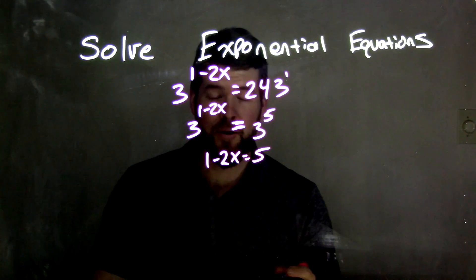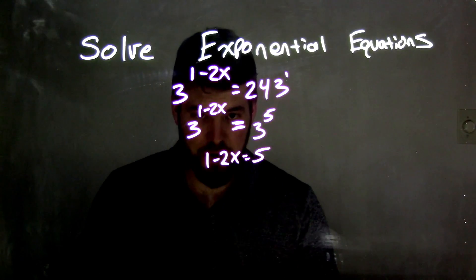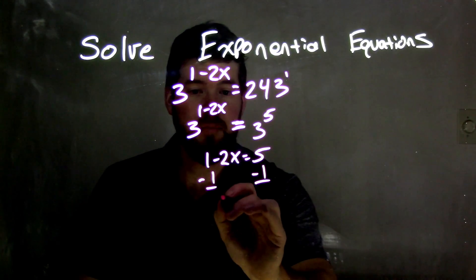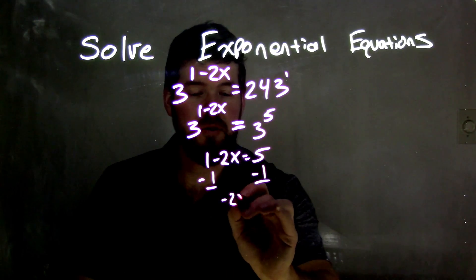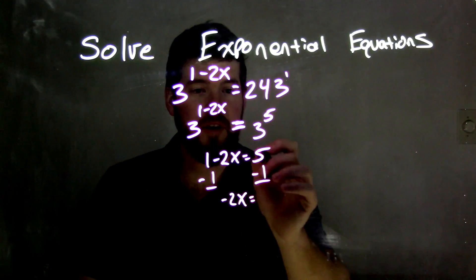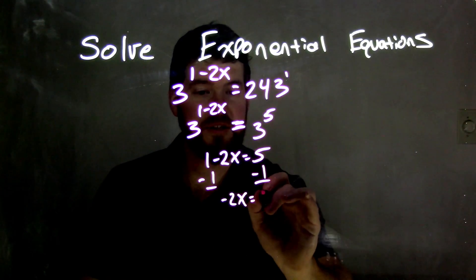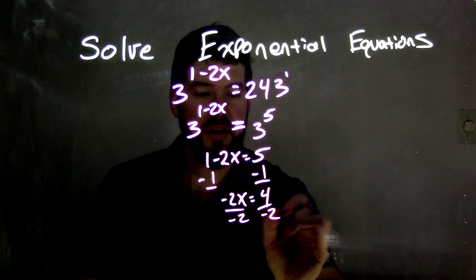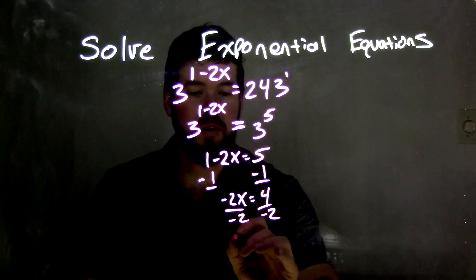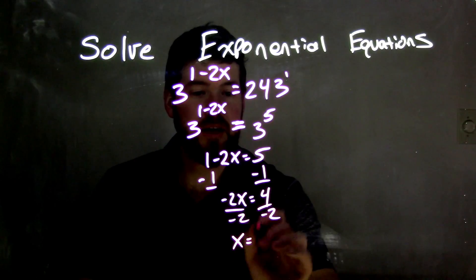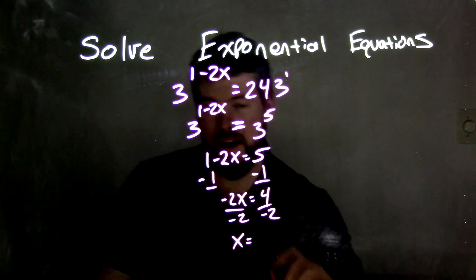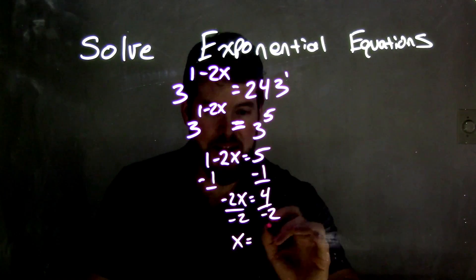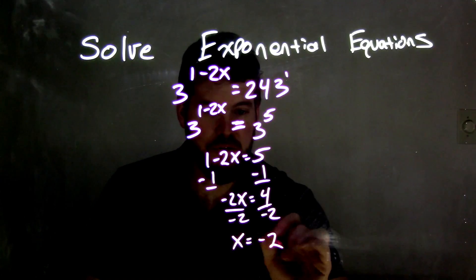Now I just solve for x. I subtract 1 from both sides, leaving negative 2x equals 4. Then I divide by negative 2, and x equals 4 divided by negative 2, which is negative 2.